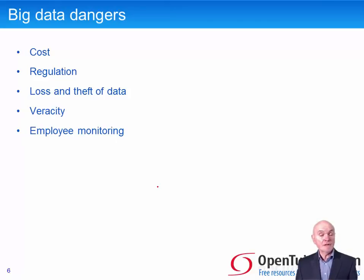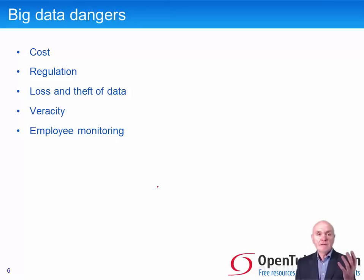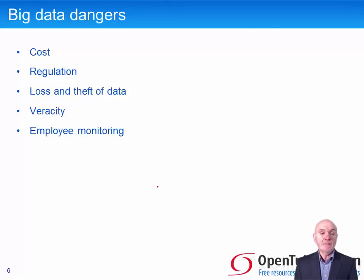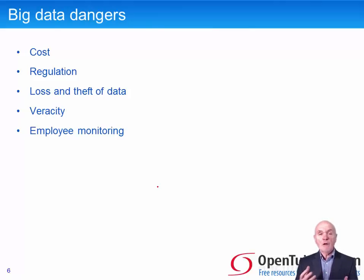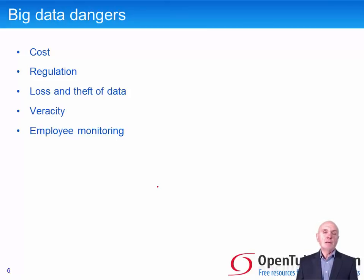If companies are found to be exploiting personal data without people's knowledge, there are risks. There's also loss and theft of data — we've had many examples of hacking where hackers break into data warehouses and download people's names, addresses, bank accounts, credit cards, consumer information, passwords, causing potential serious damage. On veracity, we have to be careful information is correct and up to date. If someone's name is confused with another's, they may end up with a bad credit record, be refused a loan, and the company may have to compensate for damages caused.